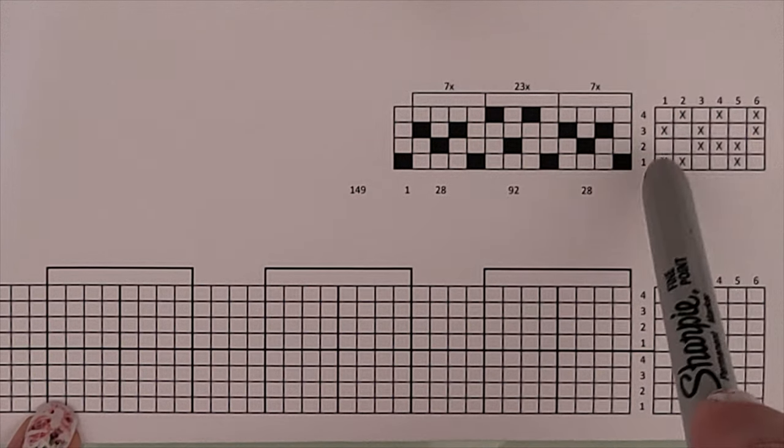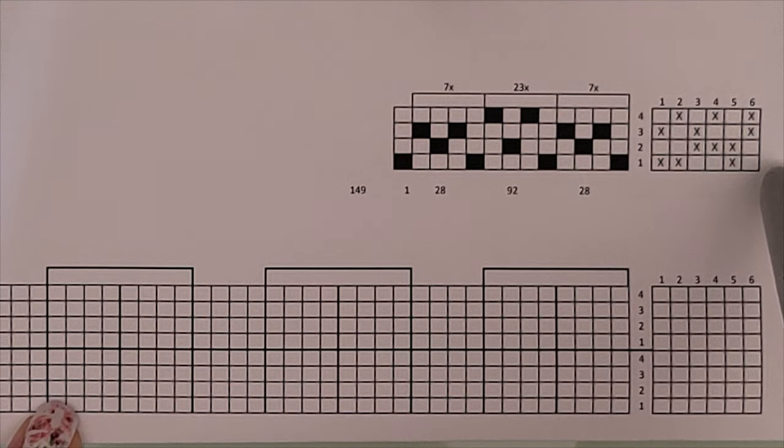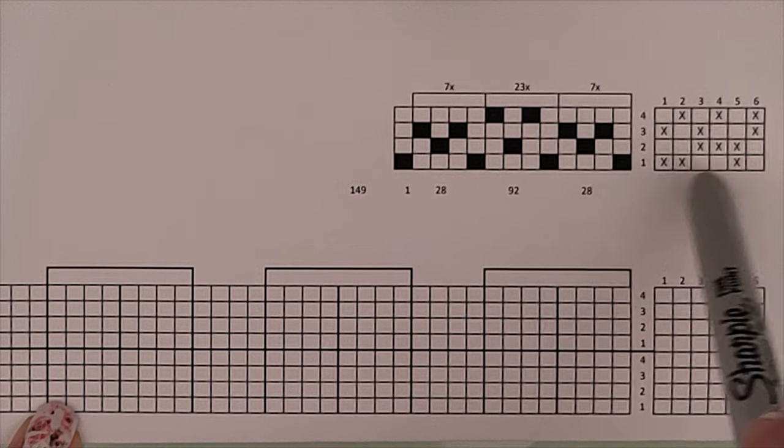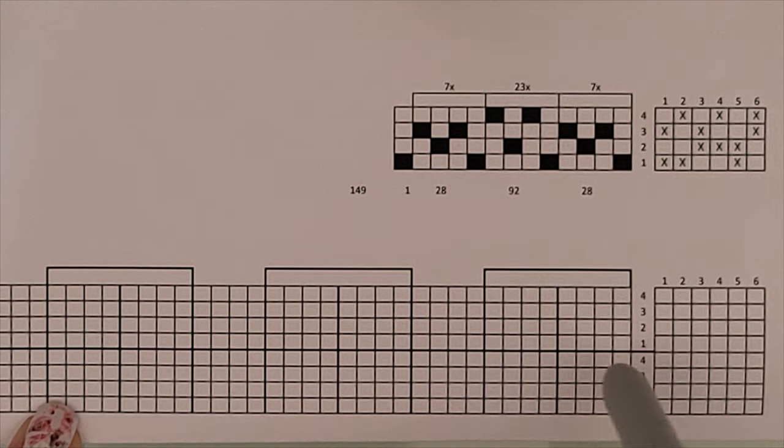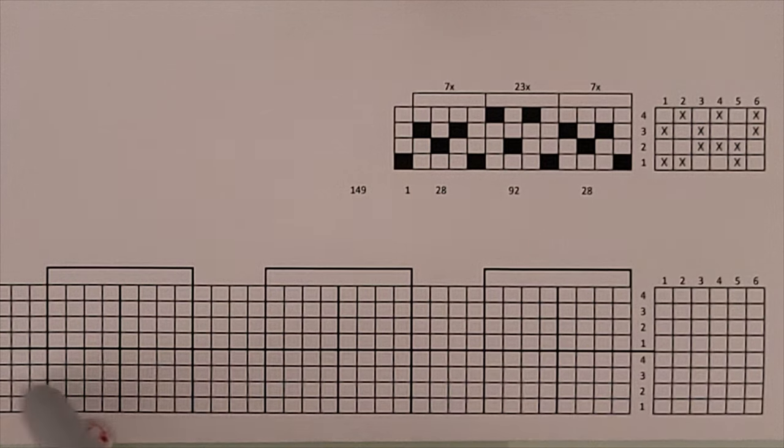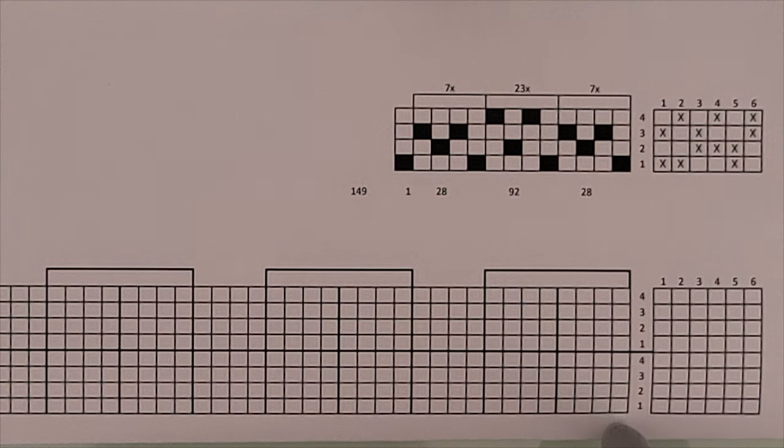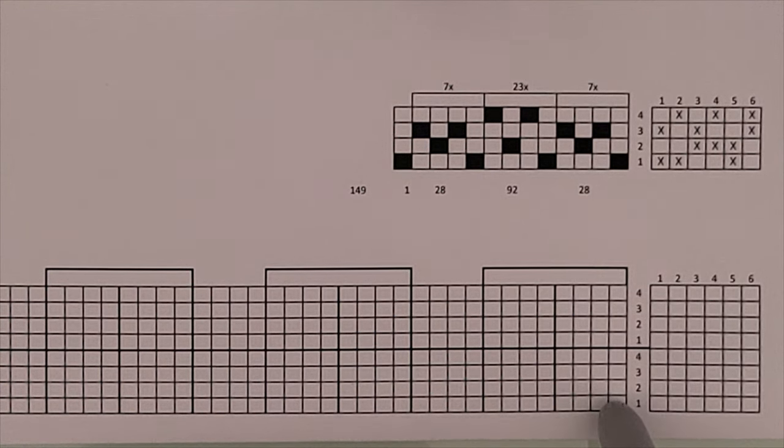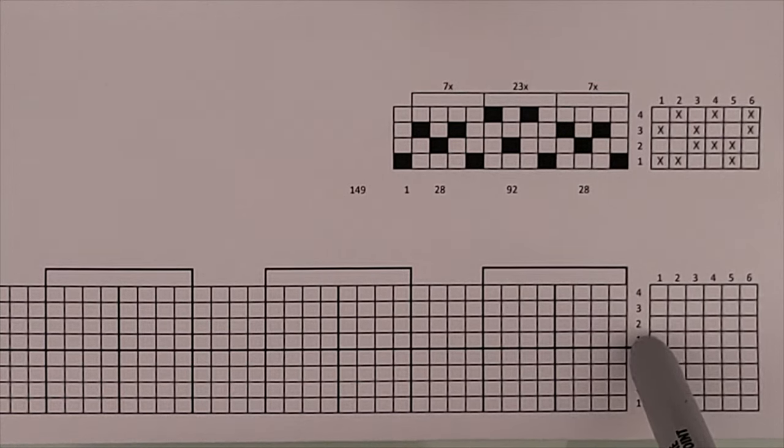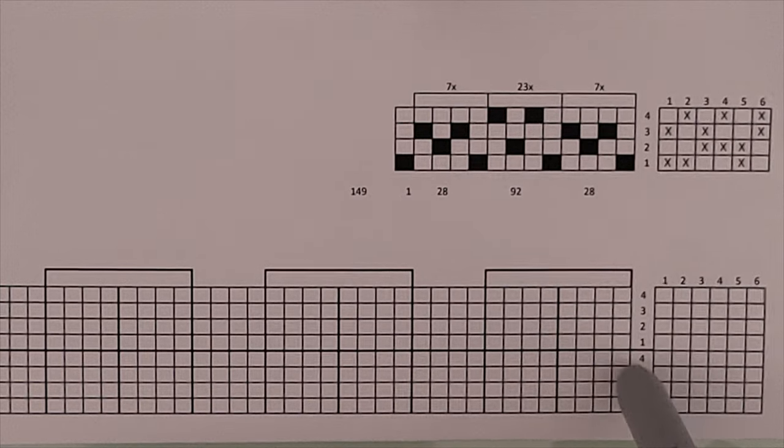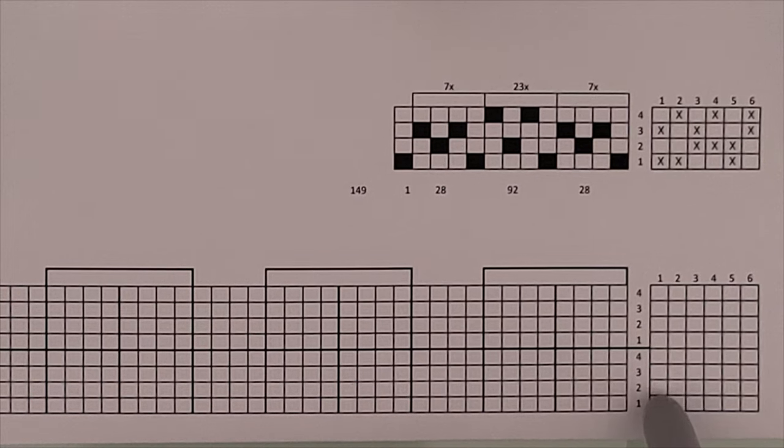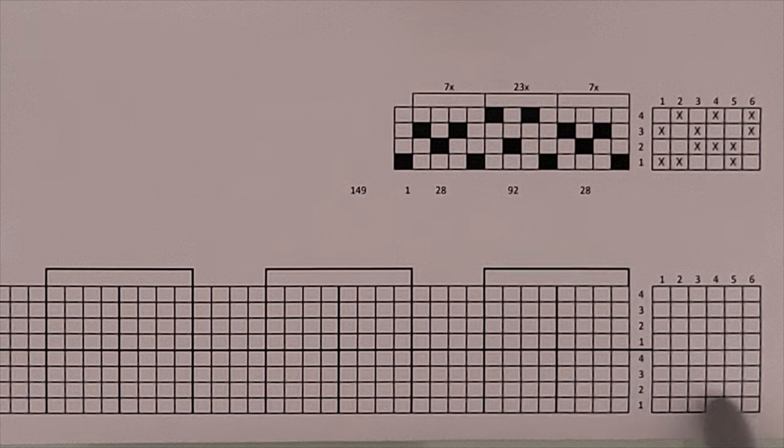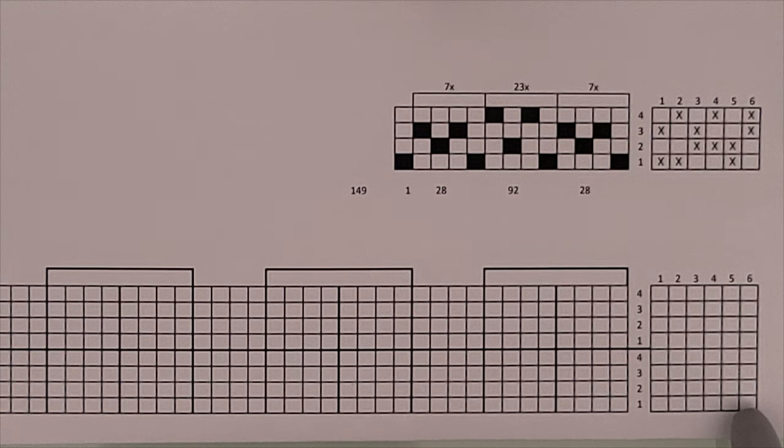Likewise, I have my tie-up here on four shafts and eight treadles. I create a blank draft with eight shafts, but I've divided the eight shafts into two sets of four and labeled them one through four on each side.